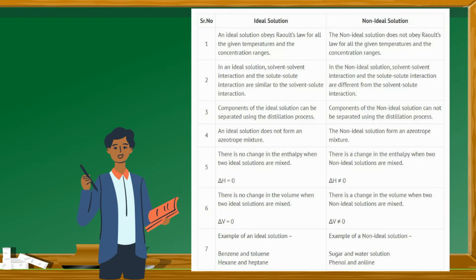Difference between ideal and non-ideal solution. Number 1: An ideal solution obeys Raoult's law for all the given temperatures and concentration ranges. The non-ideal solution does not obey Raoult's law for all the given temperatures and concentration ranges.